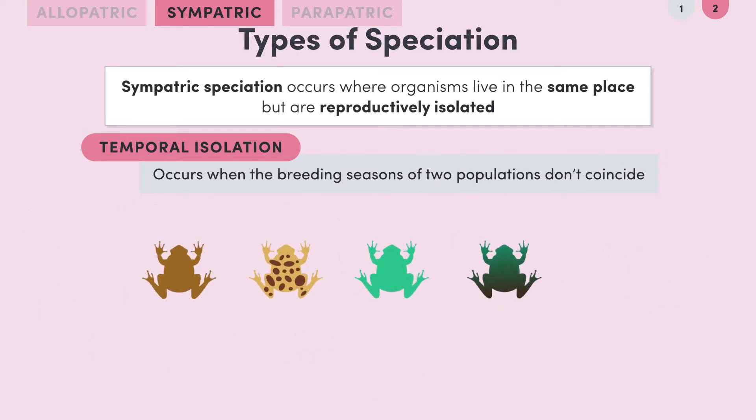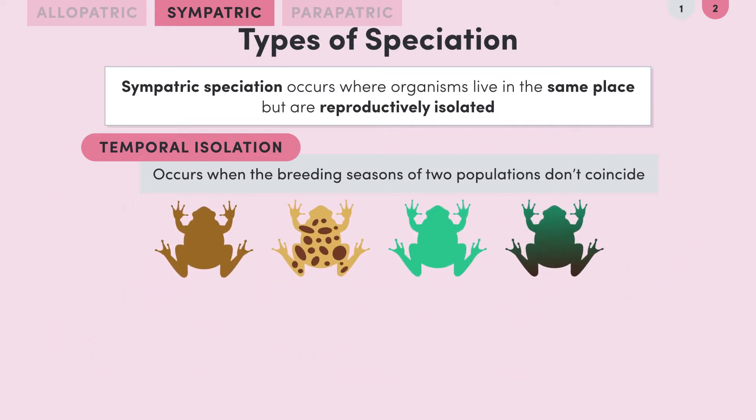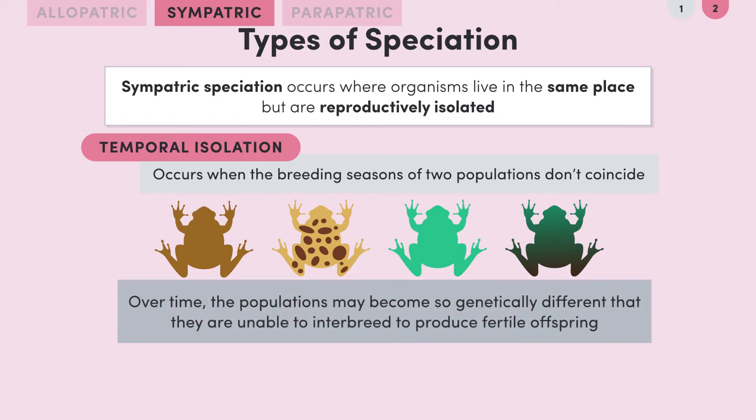This is called temporal isolation — when the breeding seasons of two populations don't coincide. Over time, these four different populations could evolve and develop such genetic differences that they wouldn't be able to successfully breed, and therefore become separate species.